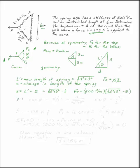Specifically, from this triangle right here, you can say that cosine of phi is going to be D over L prime, the new length of the spring, or D divided by the square root of D squared plus 3 squared.